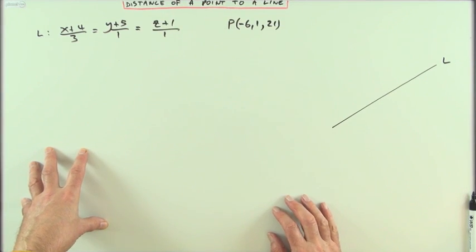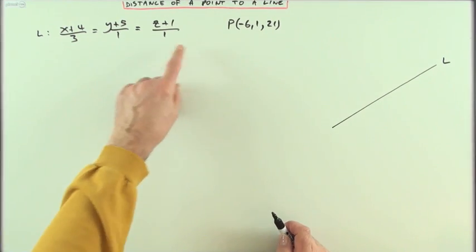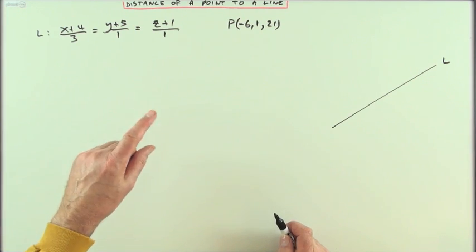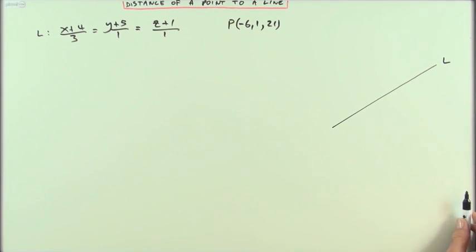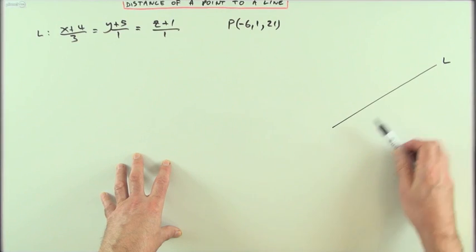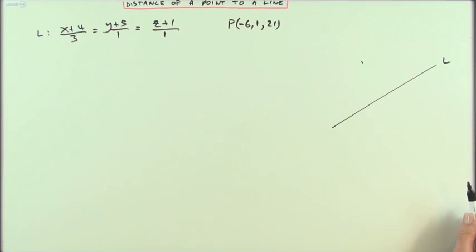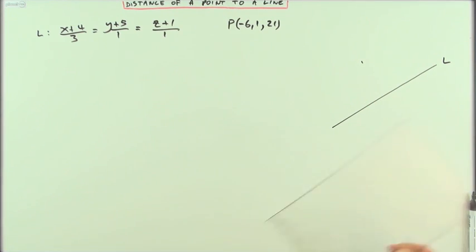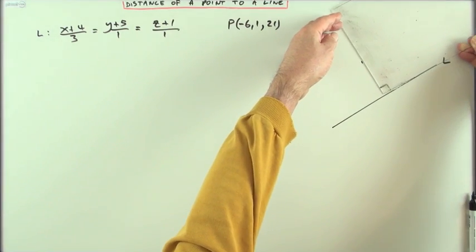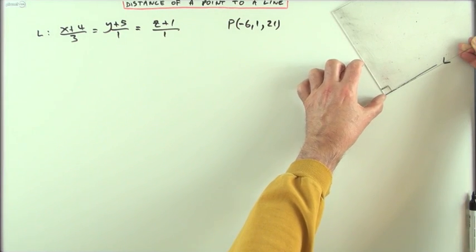Here's the first way to find the distance of a point to a line. The line is given in symmetric form. In 2D, if you've got a line and a point sitting off it, you'd take a set square, slide it along the line until it hit the point, and that would be the shortest distance.